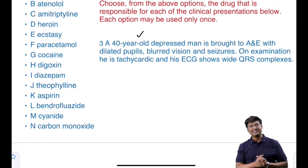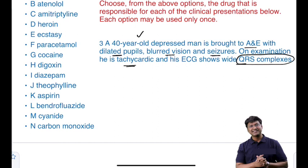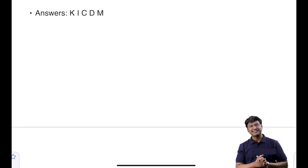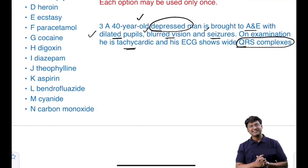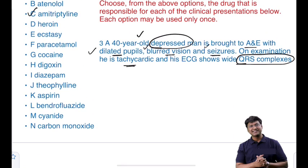On examination he is tachycardic and ECG shows wide QRS complexes. He is a depressed person — so which antidepressant among the options is responsible? He might be on amitriptyline, which is a tricyclic antidepressant. The answer is amitriptyline.